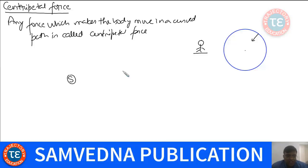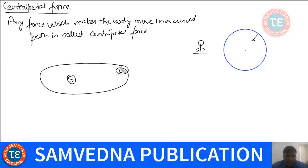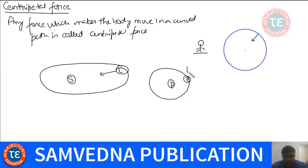For example, if you have the Sun-Earth system, the Earth is moving in an elliptical path. Which force makes the Earth move in that elliptical path? It is the gravitational force exerted by the Sun. So here, gravitational force exerted by the Sun on the Earth is the Centripetal Force. In the case of a hydrogen atom, what makes the electron move around a proton? The force that makes the electron move in a curved path around the proton is the electrostatic force — so electrostatic force is the Centripetal Force here.